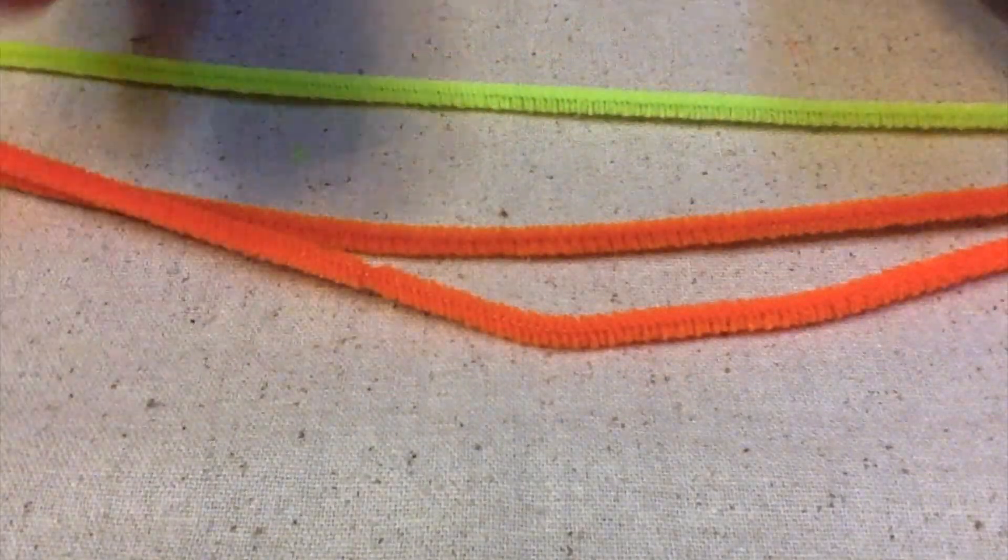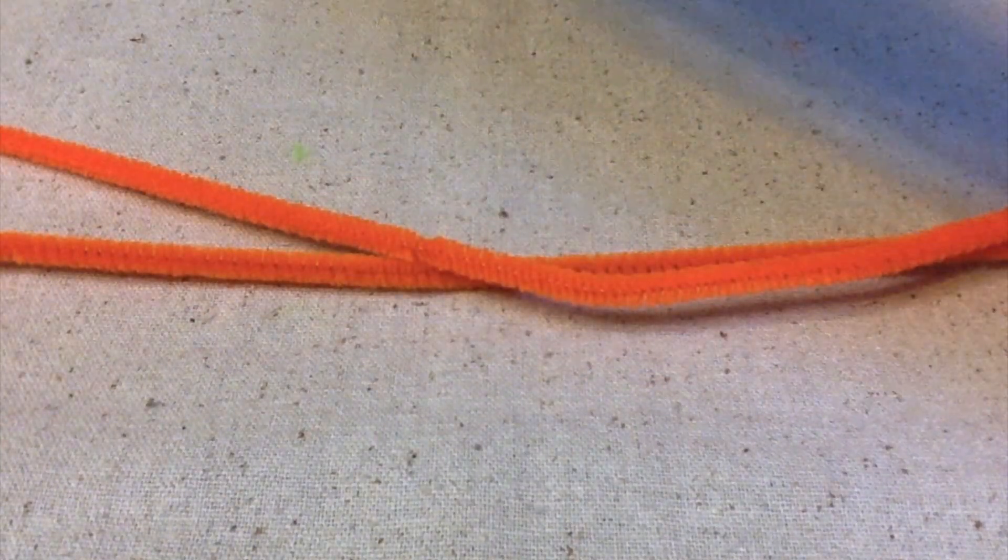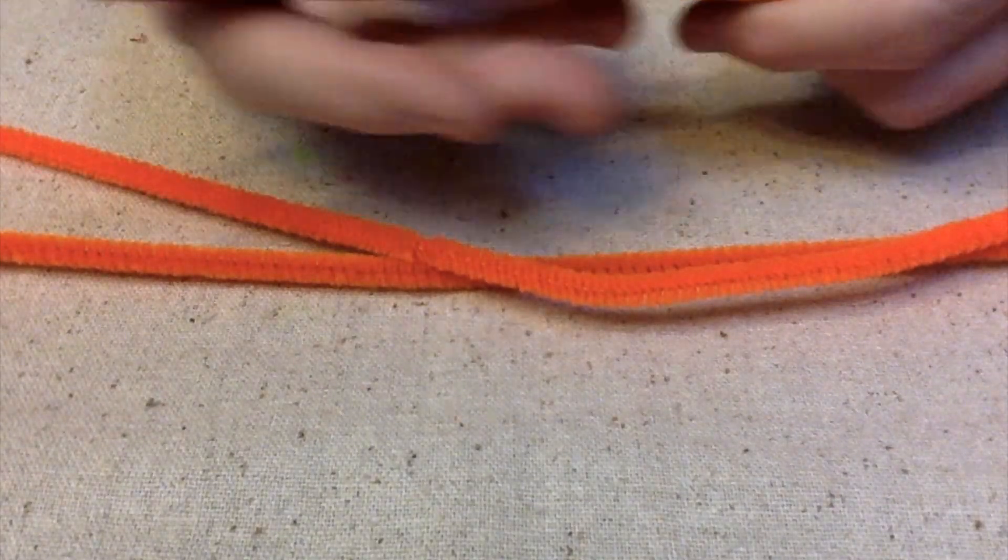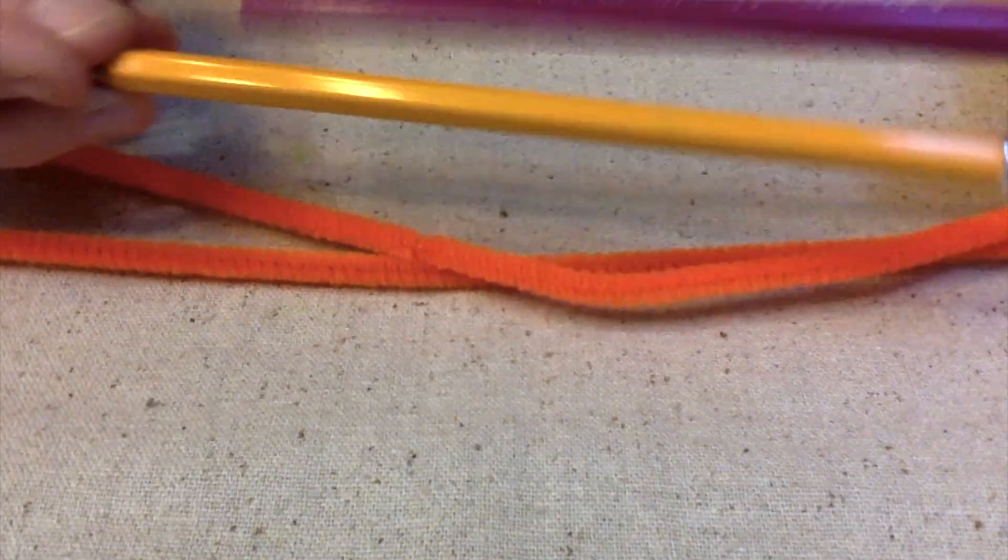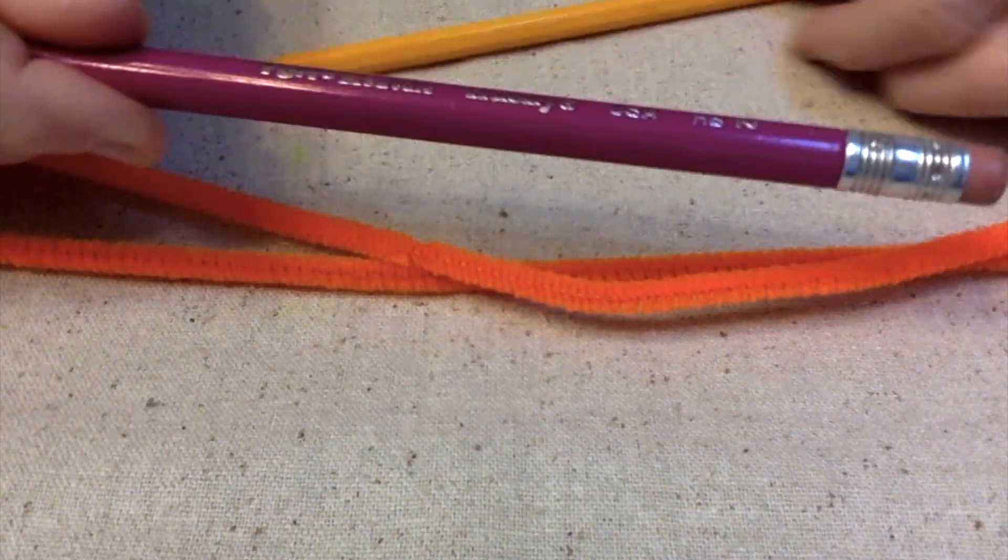So the first thing you're going to do, you have three pipe cleaners. You need two orange, one green. Set the green one aside. And you're going to need a pencil. And depending on how big you want your pumpkin determines what size pencil or other round thing you're going to use.